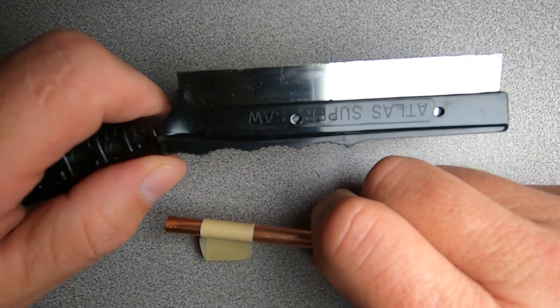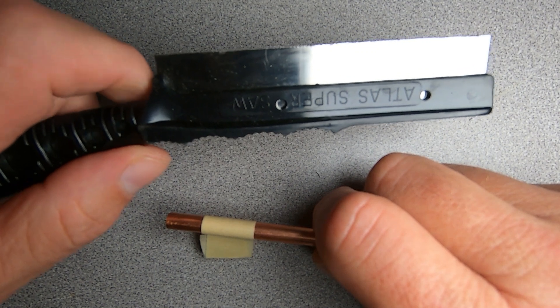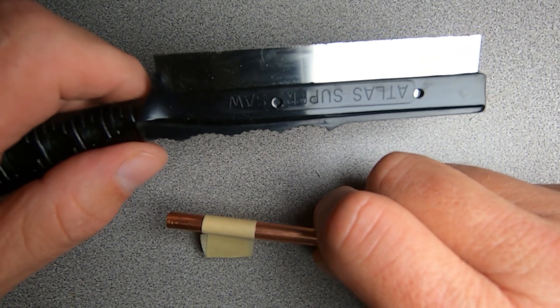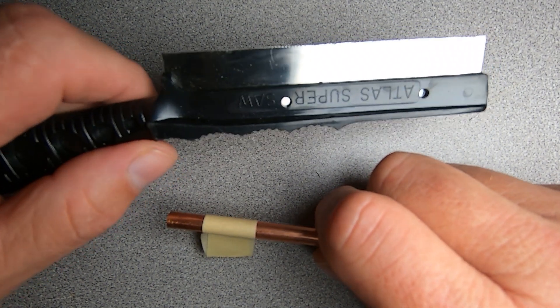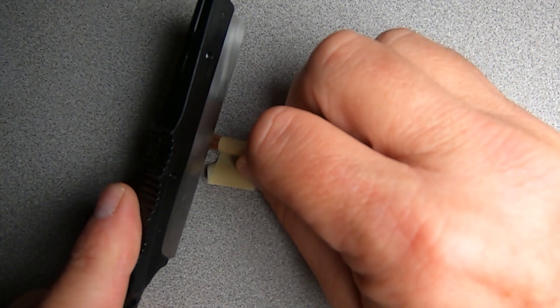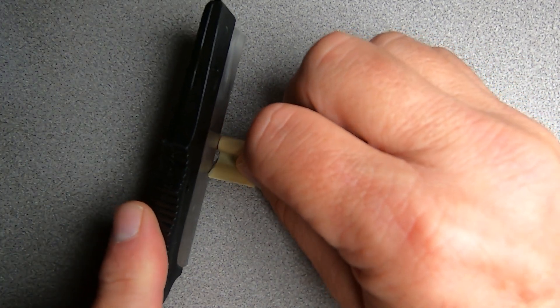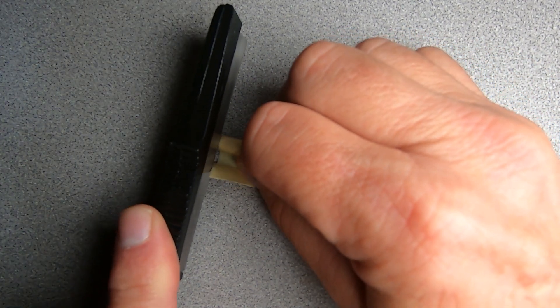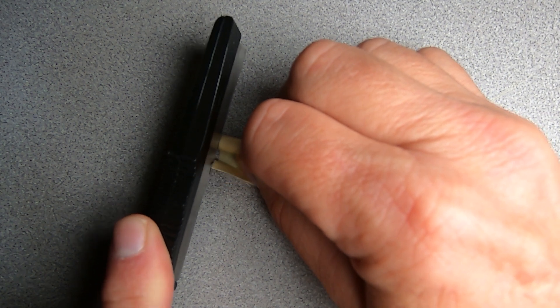So the tool I'm going to use is just an Atlas Supersaw. These are pretty common in hobbyist circles, and they're useful for a lot of stuff around the shop, and they're not too expensive. And it cuts this tubing really good. So let's go ahead and cut our repair sleeve.